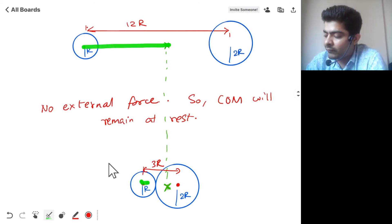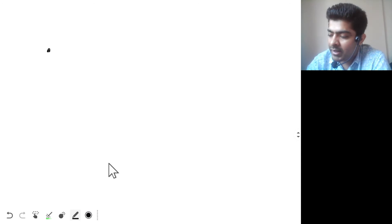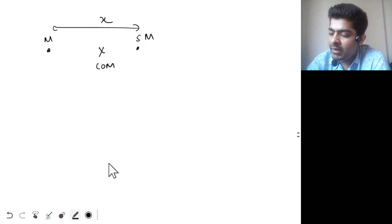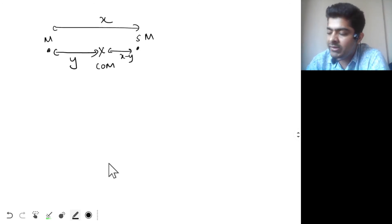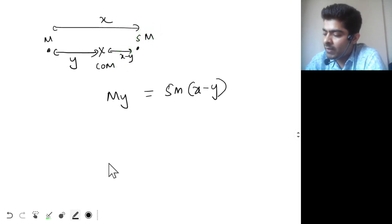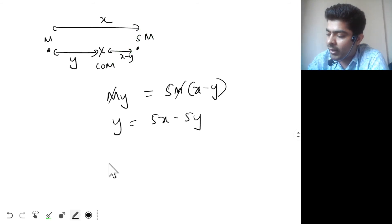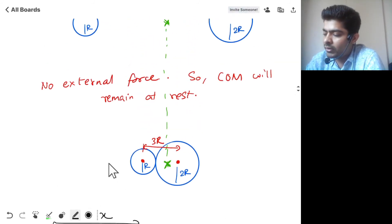Let's make a general formula. Mass m is at distance y from the center of mass, and mass 5m is at distance (x − y), where x is the total separation. For the center of mass: m·y = 5m·(x − y). Cancelling m: y = 5x − 5y, so 6y = 5x, giving y = 5x/6.